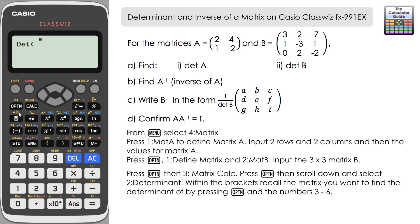In those brackets put the matrix that we want to find the determinant of, so firstly it's going to be matrix A. It's option 3, close the brackets for good practice, equals, and the determinant of matrix A there is negative 8.